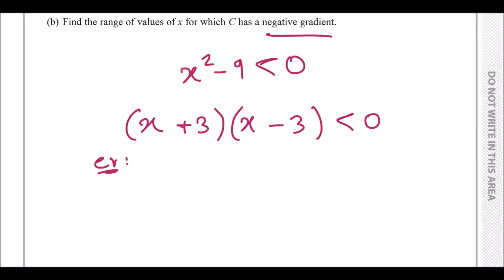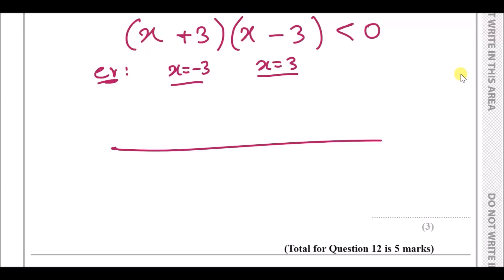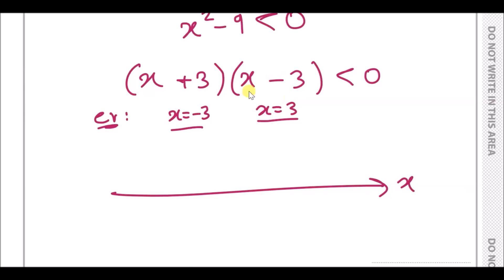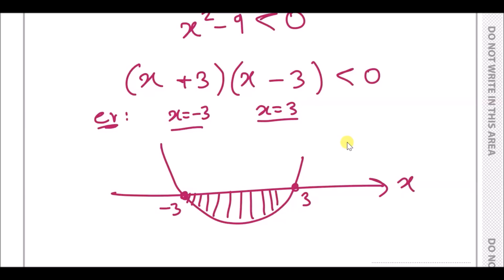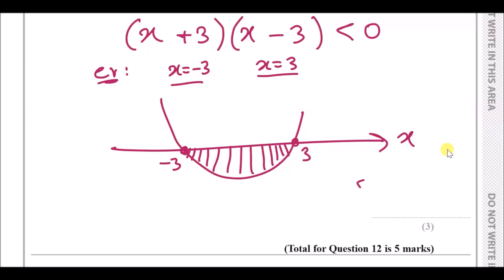The critical values are x equals minus 3 or x equals plus 3. Drawing a number line: because this is a quadratic it's a U-shape, cutting at x = −3 and x = 3. The curve dips below the line between those two values, so we can clearly see the range of values of x is minus 3 < x < plus 3.